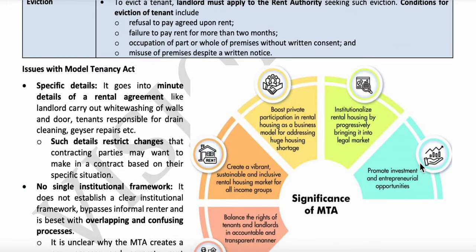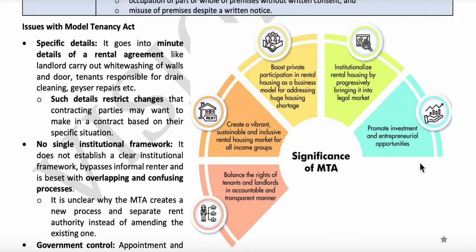Looking at the issues of the Model Tenancy Act, the Act covers even small details like whitewashing of walls, doors, geyser repairs, etc., where the tenant or landlord might feel less interested in making agreements. To solve tenant-landlord issues, a new authority called the rent authority was created. However, the process of going to the rent authority, forwarding cases to tribunals under the district administration, and the overall involvement of the rent authority and tribunals remains still confusing.